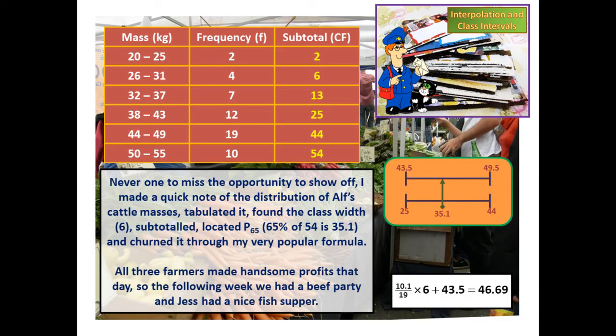Never one to miss the opportunity to show off, I made a quick note of the distribution of Alf's cattle masses, tabulated it, found the class width of 6, subtotalled, located P65 — 65% of 54 is 35.1 — and churned it through my very popular formula.